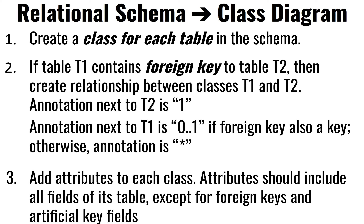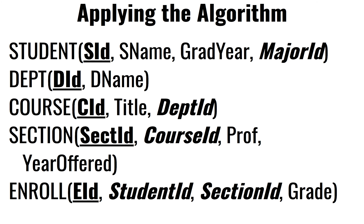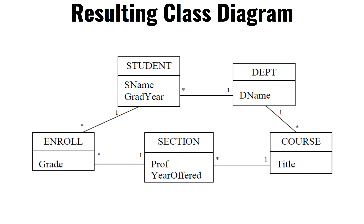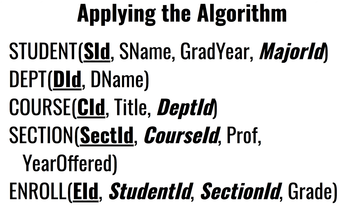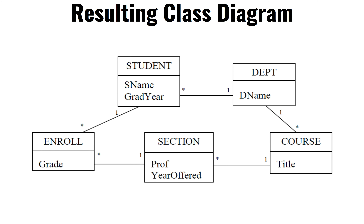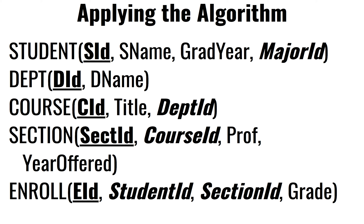All the fields in the table become attributes in the class. Applying this algorithm to our Student, Department, Course, and Section Enrollment schema, you'll conclude that this produces the corresponding class diagram. Notice we have five tables and five classes. On the Student side, the primary key is SID and there's a foreign key called major ID, so on the Student side you get a star, and on the Department side you get a one.